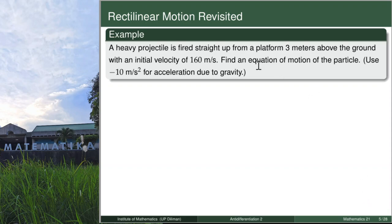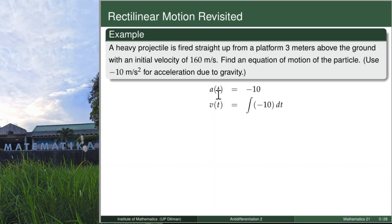Find an equation of motion of the particle. Use negative 10 meters per second squared for acceleration due to gravity. What we want to find is the position function of the particle, and we are given the acceleration of the particle, which is due to gravity. So let's first write our given: acceleration function equals negative 10. Take note that our acceleration due to gravity will be negative by convention, so we have negative 10. What we want is to get the position function, so from a, we must antidifferentiate to get v. Antidifferentiating negative 10 gives us the integral of negative 10 dt, with respect to time.